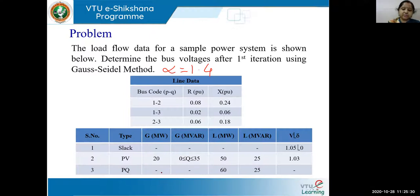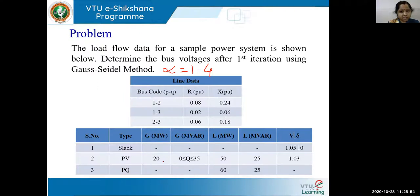Note that in this problem the generator and load values are not given in per unit but in megawatts and MVAR, while voltage is given in per unit. So first we convert to per unit. If the base is not mentioned, assume it as the highest value among the given data or consider 100 MVA. For this particular problem, I have taken 60 MVA as the base value. Let us see how the Y bus looks for this network.